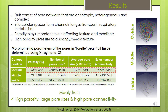Fruit consists of pore networks that are anisotropic, heterogeneous, and complex. These intercellular spaces form channels for gas transport that are necessary for respiratory metabolism. Porosity plays a very important role in fruit since it affects texture and thus mealiness.